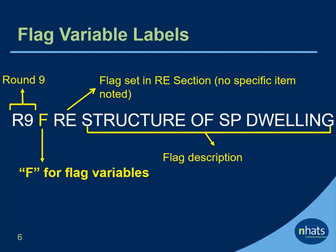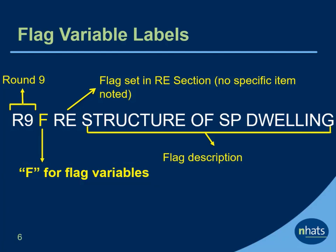Flag variable labels include the same information as variable labels, but the label includes the letter F after the round number. Because flags can be set in multiple places, some flag labels have just the section where the flag was set, and others include both the section and item number.